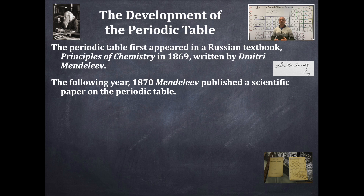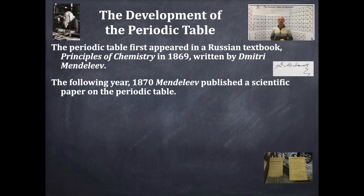It was actually Mendeleev's students who encouraged him to publish his work — they found his class so useful they told him: 'You have to publish this information so the whole world can know.' It's a good thing they did, because the following year another chemist came up with a similar periodic table — a name that gets lost in history.